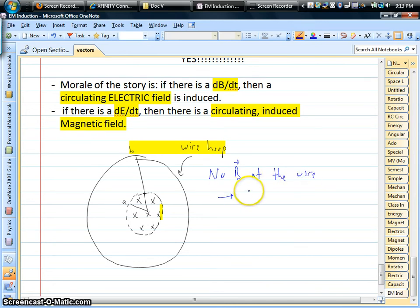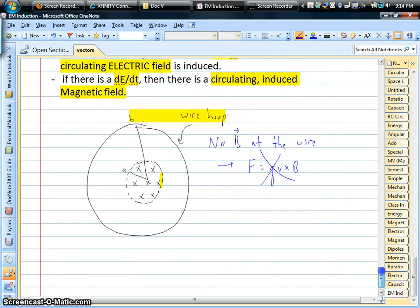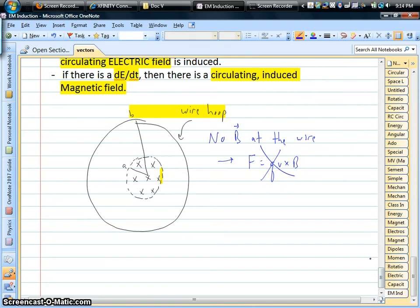So, what that means is that there's no way that you can have something like Q V cross B happening to those free electrons in that conducting wire. That can't explain it, because there is no magnetic field there. There's no magnetic force that's going to happen on that wire.